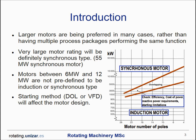For the oil and gas industry, electric motors are becoming more and more critical. When dealing with high-power motors, reliability and efficiency are two things that are carefully evaluated. Furthermore, larger motors are being preferred in many cases rather than having multiple units performing the same function. For example, a 55 MW motor was built to be used in an oil and gas facility in Africa — a motor of this size will definitely be a synchronous motor. On the other hand, motors of smaller rating, say 6 to 12 MW, are not predefined as induction or synchronous, and this selection is what this module will address.